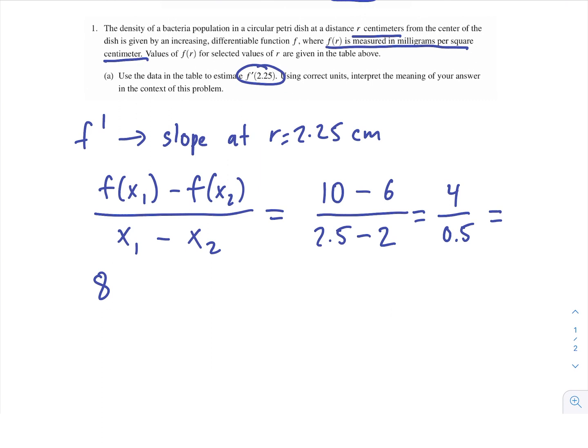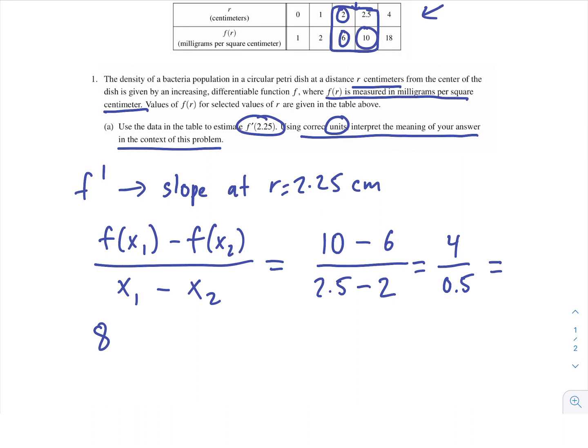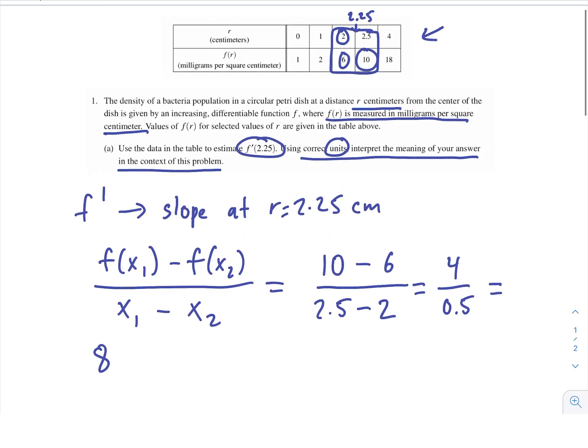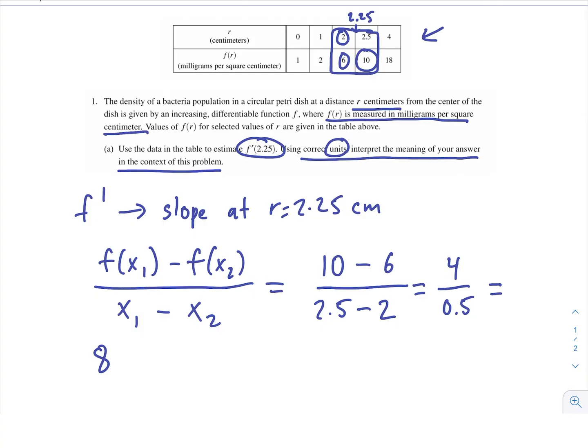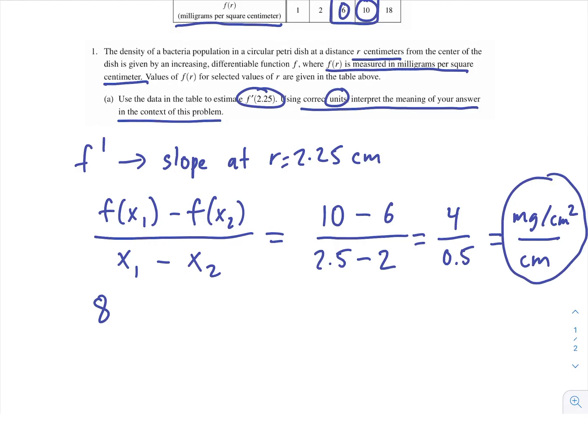But now there's a second part of the problem. Make sure you're addressing all parts of the problem. And it says, using correct units, interpret the meaning of your answer in the context of this problem. So units - I underlined the units in the problem, but now we need to apply them to our answer. So one way that I like to do this is we found the slope, but for both the numerator and the denominator, each of those had units that they came with. So the bottom was r, which we measure in centimeters, and up at the top, we had milligrams per square centimeter. So this would be our final unit for our interpretation: milligrams per square centimeter per centimeter.